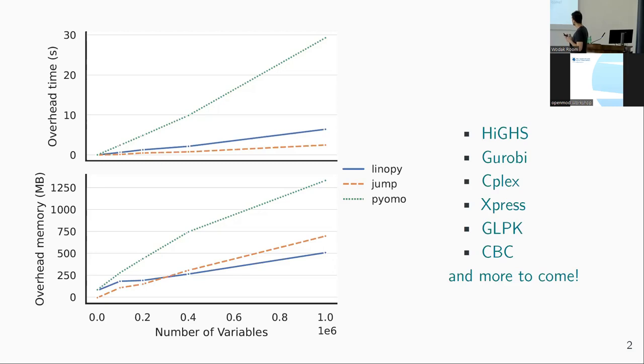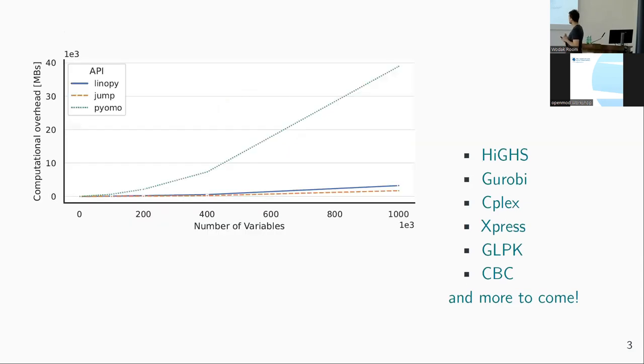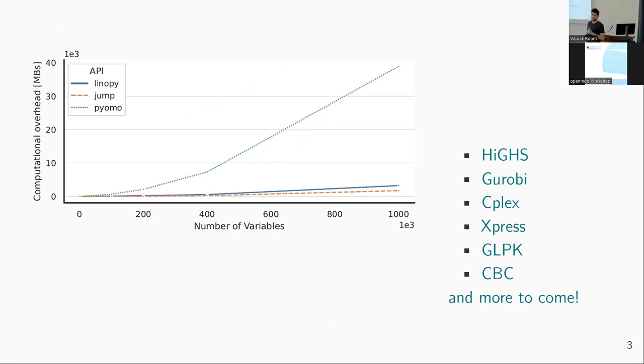To show you what solvers we support: Gurobi, CPLEX, Xpress, GLPK, and CBC, and there's even more to come that we want to integrate. From a resource perspective, if you combine these two - time and memory - and multiply them, then you see Pyomo is really bad because it takes a lot of time and memory resources. If you compare these to Linopy and Jump, it's quite a difference.